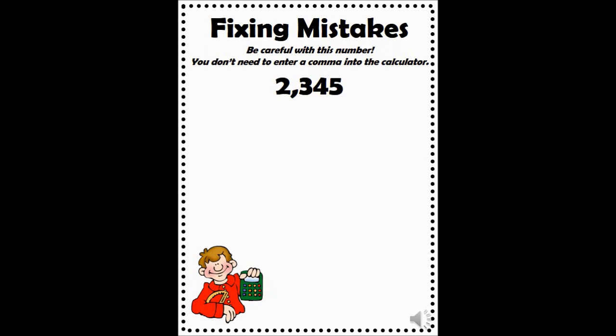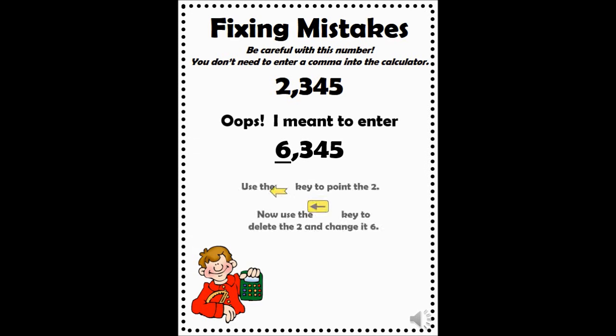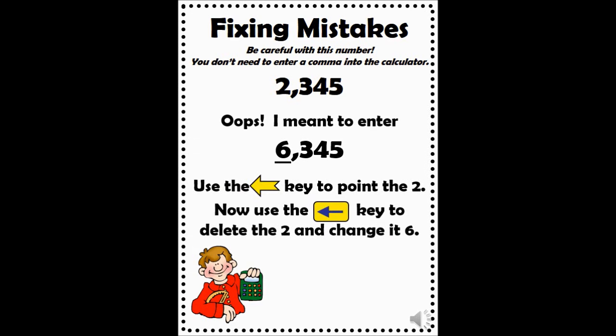Let's take a look at another way to fix mistakes. Enter the number 2345 into your calculator. Be careful, you don't need to enter a comma into the calculator. Oops, I meant to tell you to enter the number 6345. The only digit we need to change here is the 2 in the thousands place. To fix this mistake, use the left arrow key toward the top of your calculator until the arrow in your display is pointing to the digit you want to change. It should be pointing to the 2 in the thousands place.